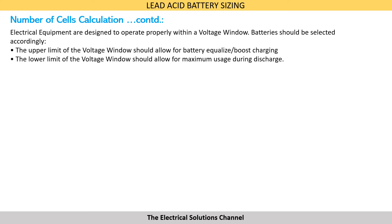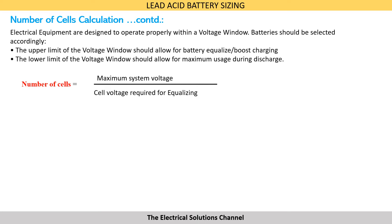Electrical equipment are designed to operate properly within a voltage window. Batteries should be selected accordingly. The upper limit of the voltage window should allow for battery equalizing or boost charging, whereas the lower limit of the voltage window should allow for maximum usage during discharge. Accordingly, the number of cells can be calculated as maximum system voltage divided by the cell voltage required for equalizing.